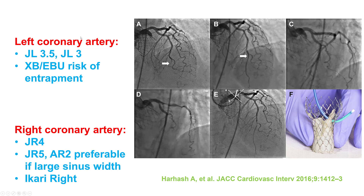Various catheters can be used for the left coronary artery. Standard Judkins left are used, often the shorter ones, but also the EXB and EBU guides are used, with a potential risk of entrapment of the guide catheter. For the right coronary artery, usually Judkins right catheters are used.